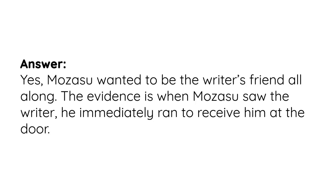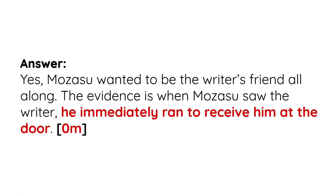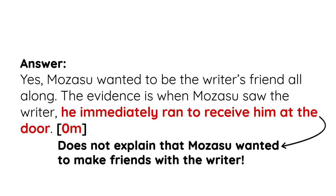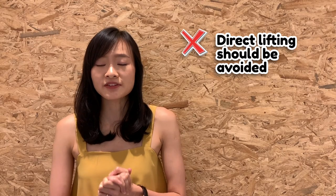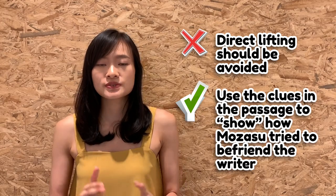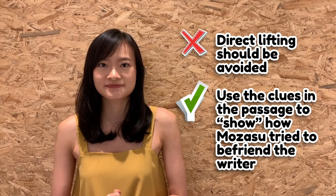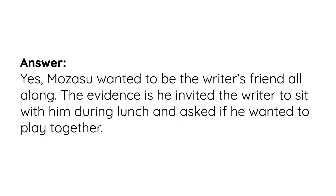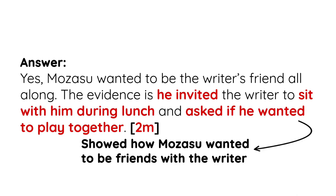For example, an incorrect answer: 'Yes, Mozasu wanted to be the writer's friend all along. The evidence is when Mozasu saw the writer, he immediately ran to receive him at the door.' Note how this evidence does not explain that Mozasu wanted to make friends with the writer, so no marks will be awarded even if the first part is correct. Also, direct listing should be avoided — use the clues in the passage to show how Mozasu wanted to befriend the writer. A correct answer: 'Yes, Mozasu wanted to be the writer's friend all along. The evidence is he invited the writer to sit with him during lunch and asked if he wanted to play together.' This evidence clearly shows how Mozasu wanted to be friends with the writer.